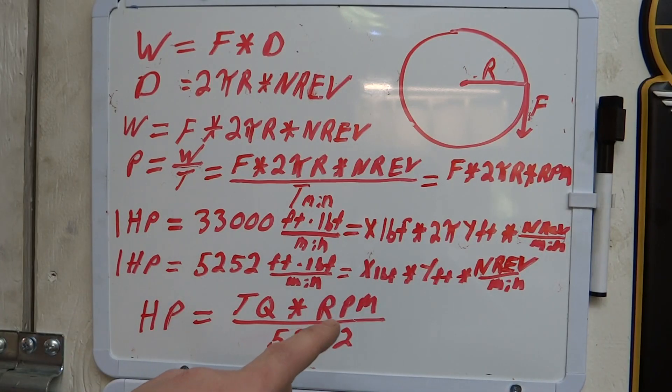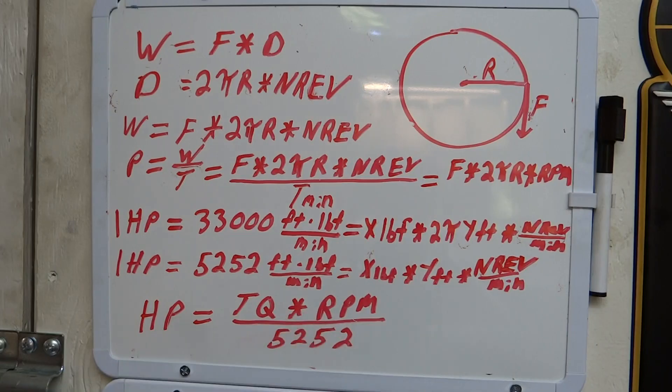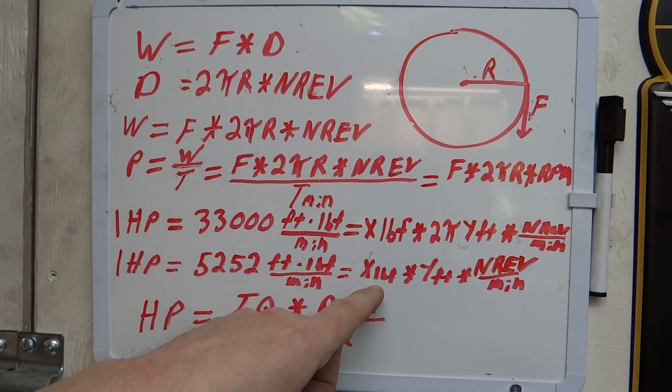So the next thing to look at is what do we have over here? So we got X in pounds force, Y in feet. So you got foot-pounds, and what's that? That's torque, right? So we can represent that as torque.